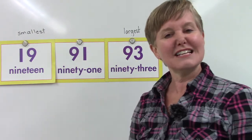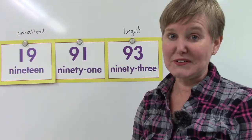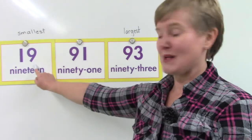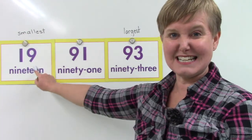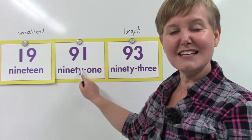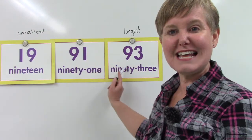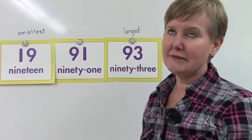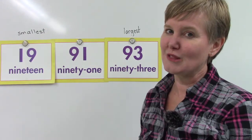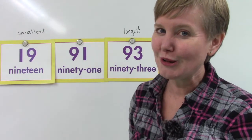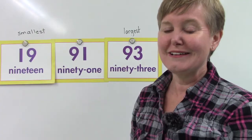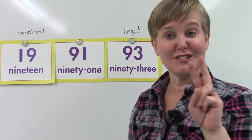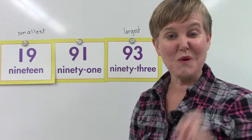Let's look at these three numbers in order now. The smallest one is 19, and then 91 and 93. Now 91 and 93 are pretty close, but 93 is still two more.